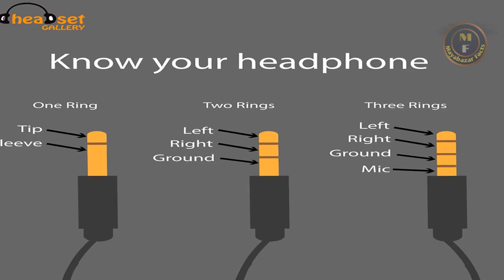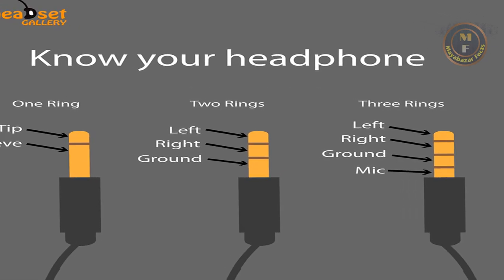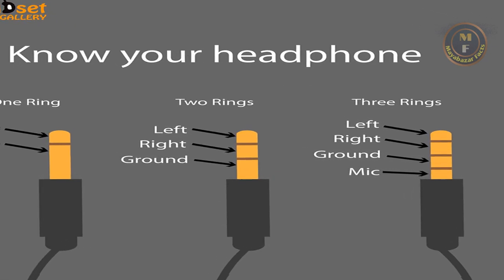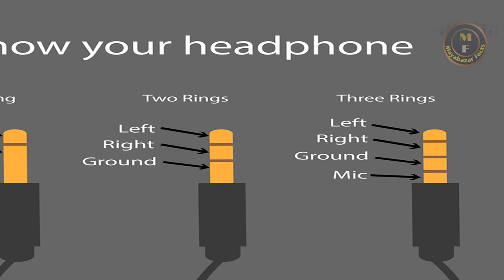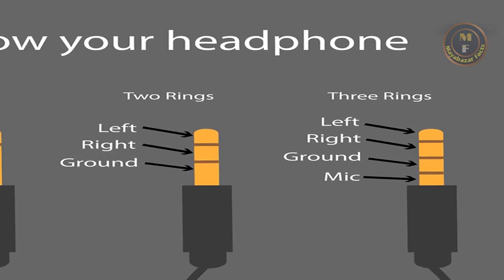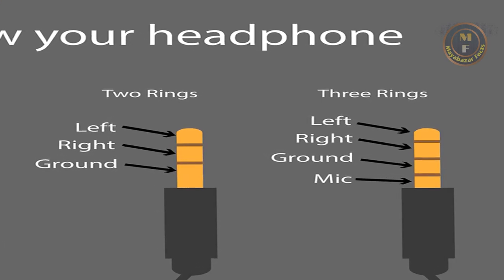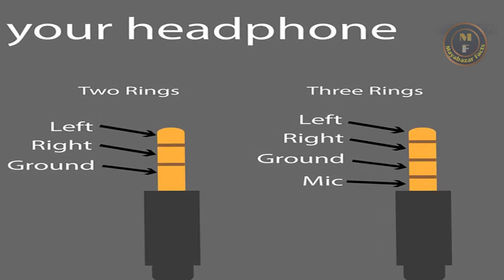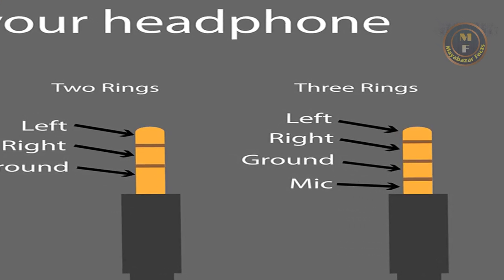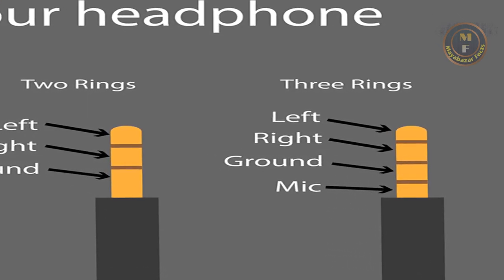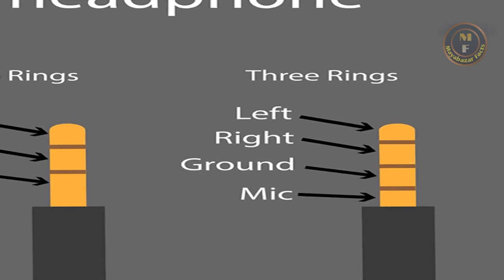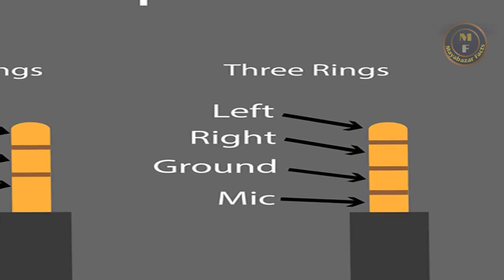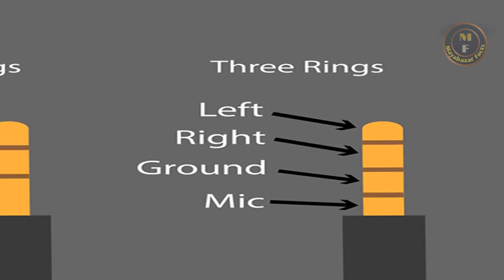The last type is TRRS type. There are three rings and four sections in the jack: tip, ring, ring, and sleeve. This type carries the same audio signals as TRS, plus a mic signal. This includes the microphone.